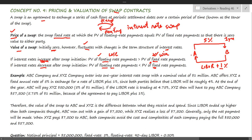Company B will pay the interest to Company A for the entire year. For calculation purposes, we take a notional principal of one million dollars. Company B agrees to LIBOR plus one percent because it expects LIBOR at the end of the contract to be around four percent.